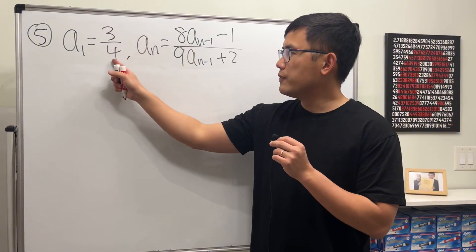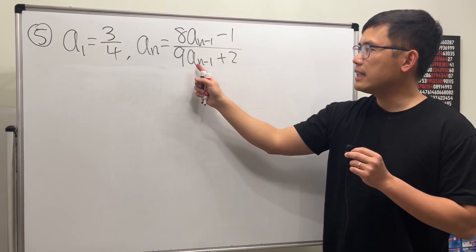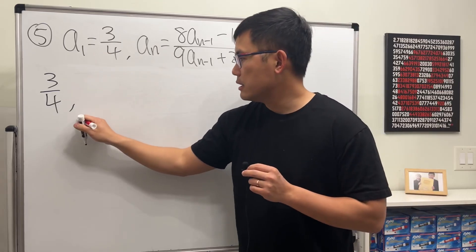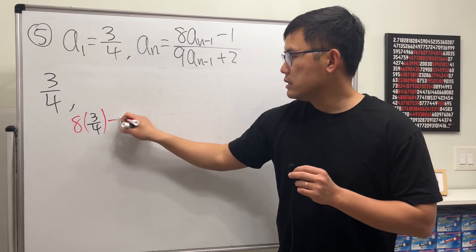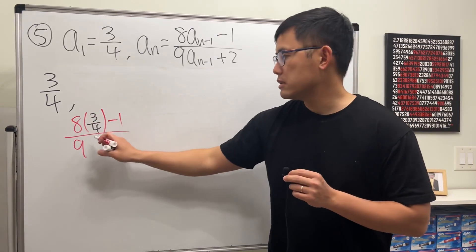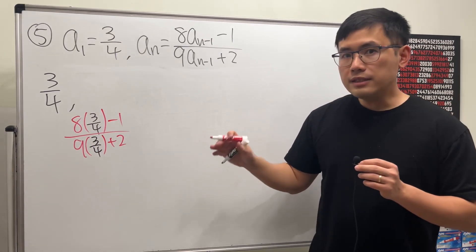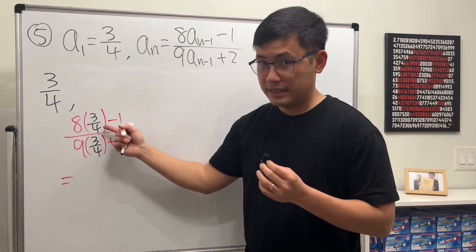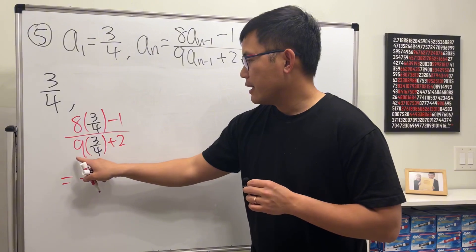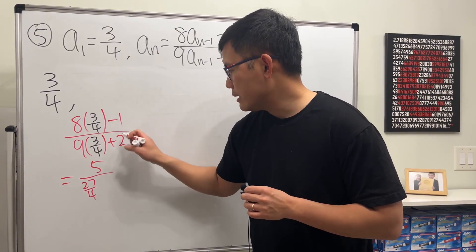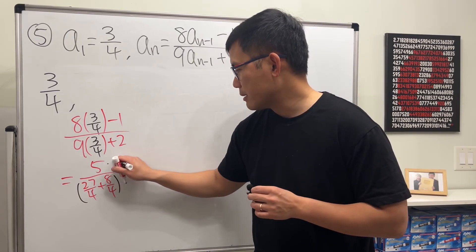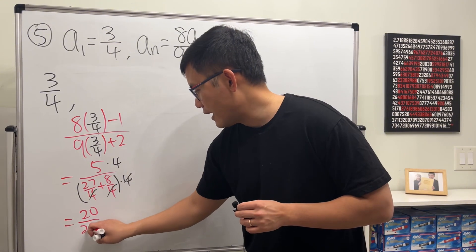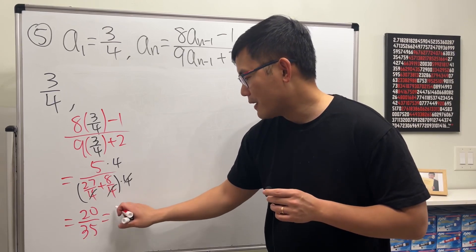Last one: we have a1 equals 3/4, and an equals (8 times the previous minus 1) over (9 times the previous plus 2). Starting with 3/4: for the next term, we do 8 times 3/4, which is 6, minus 1 is 5 — that's the numerator. The denominator: 9 times 3/4 is 27/4, and plus 2 is the same as plus 8/4. Multiplying top and bottom by 4 gives 20 on top, and 27 plus 8 is 35 on the bottom. Reducing by 5, we get 4/7.